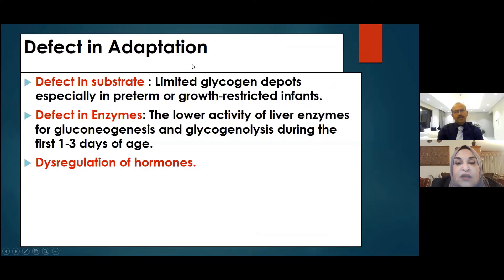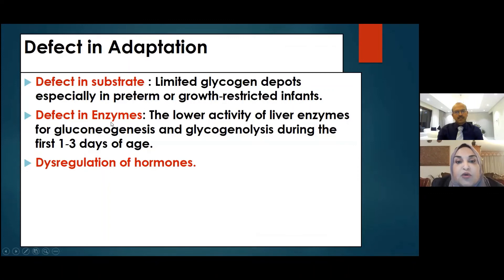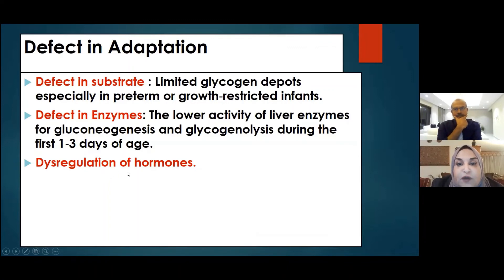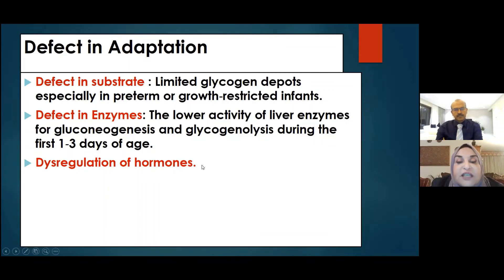What happens if there is a defect in this adaptation? The defect could be in the substrate itself — such as limited glycogen deposition or a defect in the enzymes responsible for glycogenolysis and gluconeogenesis. Or there may be dysregulation of hormones: instead of insulin being low, it is high, causing hyperinsulinemia; or the counter-regulatory hormones, instead of being increased, are decreased. Any defect in one of these steps will cause hypoglycemia in the newborn.